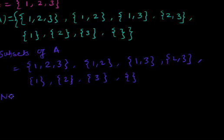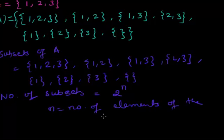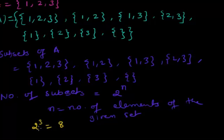The number of subsets of a given set follows a certain rule: 2 to the power n, where n is the number of elements of the given set. Here we had three elements, so 2 to the power 3 gives us 8 — so there should be 8 subsets of the given set A.